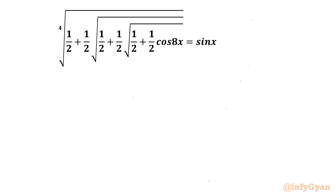Welcome back to Infigyan friends. In this video we are going to take up one very interesting radical challenge from trigonometric equations. We have to solve the 4th root of half plus half times square root of half plus half times square root of half plus half times cos 8x, equal to sin x. We will find out the principal as well as general solution. So let us get started.